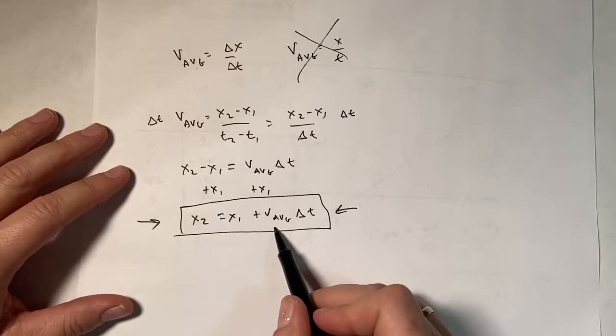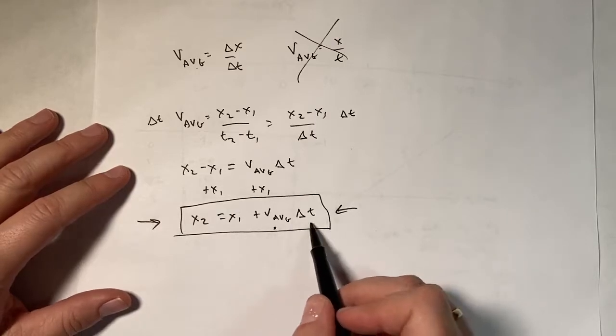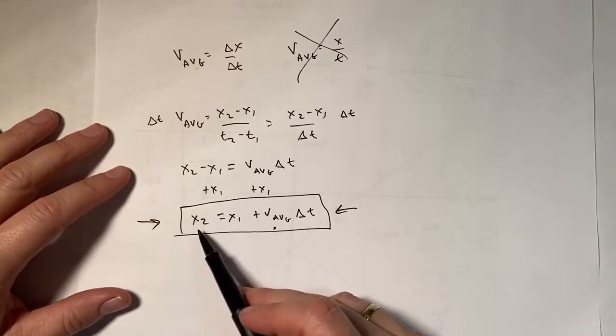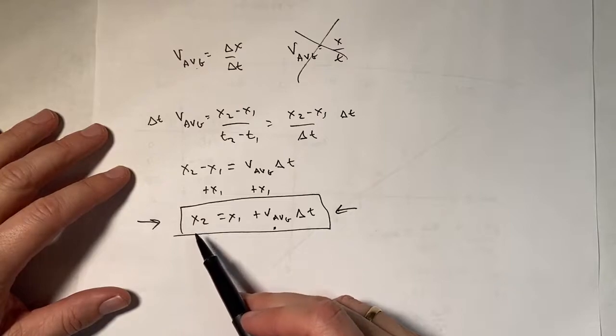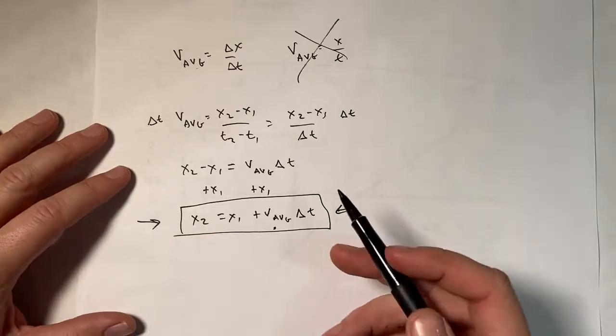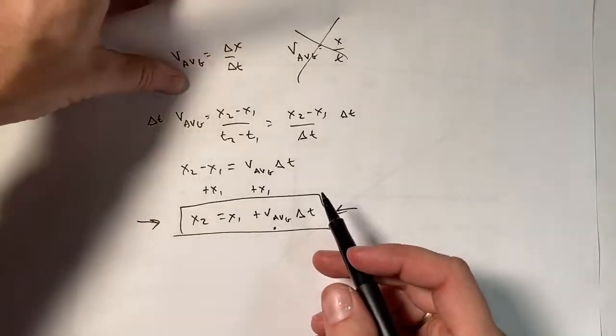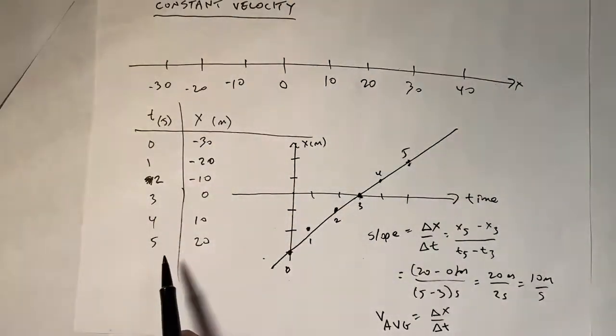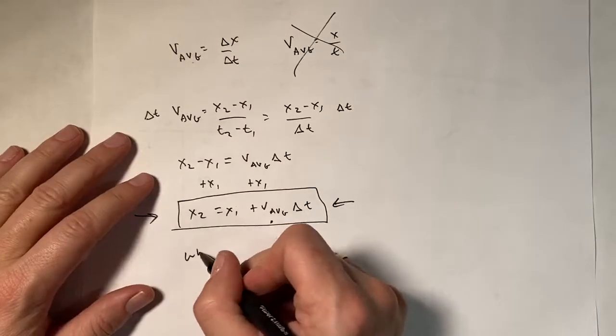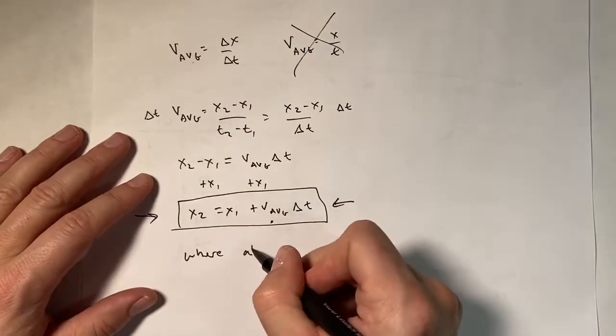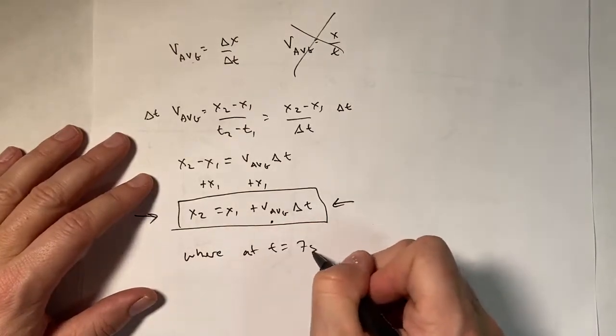This tells me if I know the average velocity, and I know the change in time and where it started, I can find out where it's going to be later. I can predict where it's going to be. So let's do that. So in my graph, I only went up to 5 seconds.